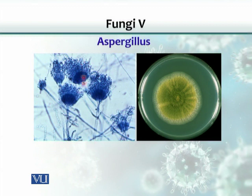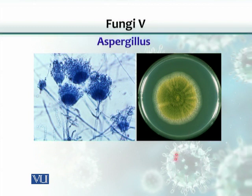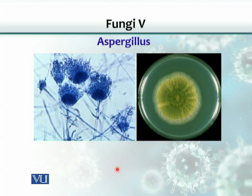You can see the arrangements of the spores. This is a typical arrangement — this is a conidiophore and these are conidia arranged in chains. This is Aspergillus. You can also see the same Aspergillus culture on a Sabouraud's agar. Fungi also produce spores of different colors, and by color we can sometimes identify them, but we must also verify the arrangement of the spores, since some fungi share the same spore color but differ in arrangement.